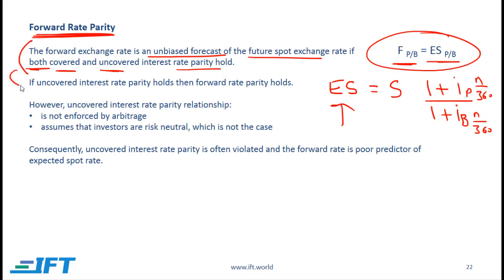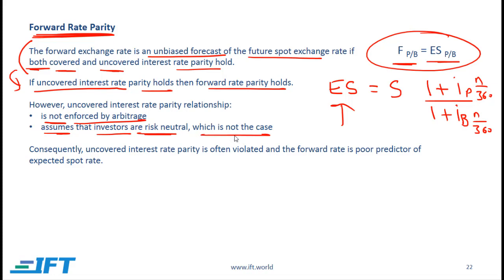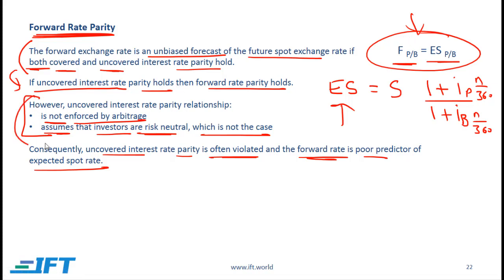What follows is that if uncovered interest rate parity holds, then forward rate parity holds. However, the uncovered interest rate parity relationship is not enforced by arbitrage, and it also assumes investors are risk neutral, which is not necessarily the case. Because of this, uncovered interest rate parity is often violated, and therefore the forward rate is a poor predictor of the expected spot rate. These parity relationships are models that make predictions, but the models are not necessarily perfect, and their predictions are often not correct.